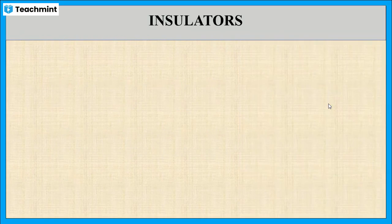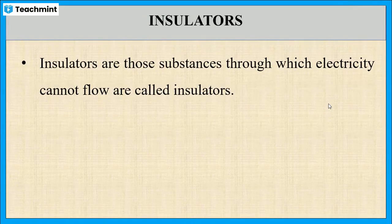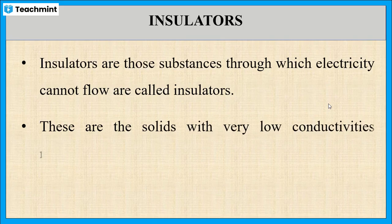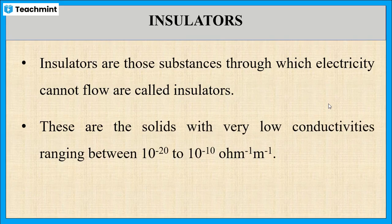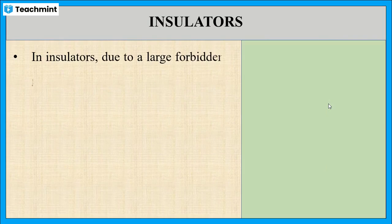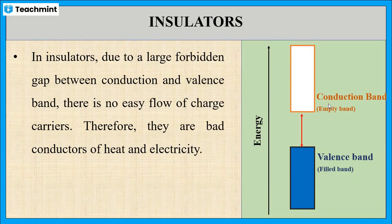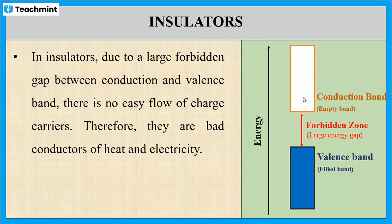Next, let us see about insulators. These are the substances through which electricity cannot flow. Such type of substances are known as insulators. These are the solids whose conductivity is ranging between 10 to the power minus 20 to 10 to the power minus 10 per ohm per meter. Glass, plastic, rubber, and wood are examples of insulators. In insulators, the energy gap between the valence band and the unoccupied conduction band is large. We can see here the energy gap between the valence band and the conduction band is large. Hence, electrons cannot jump to the empty conduction band, and these substances have very small conductivity and behave as insulators.